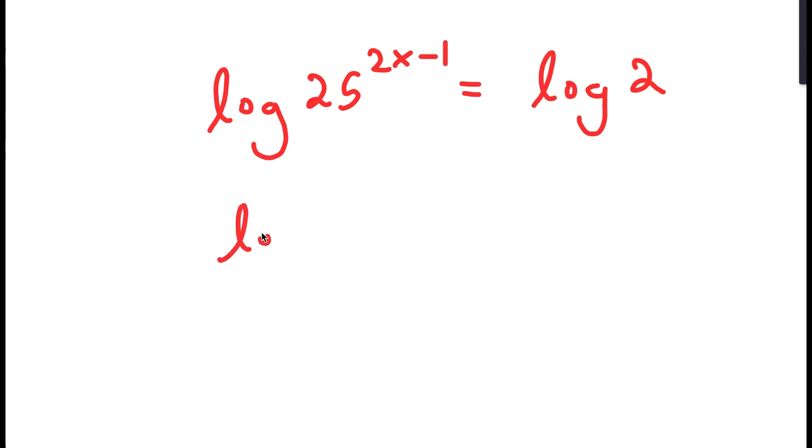And I'm also going to rewrite 25 as 5 squared. So I get 5 to the power of 2 times 2x minus 1 is equal to log of 2.